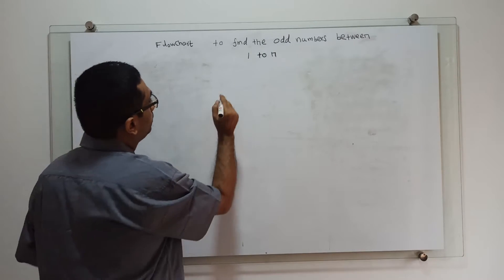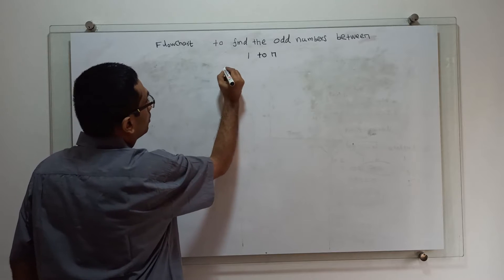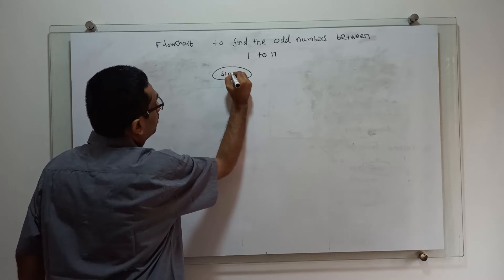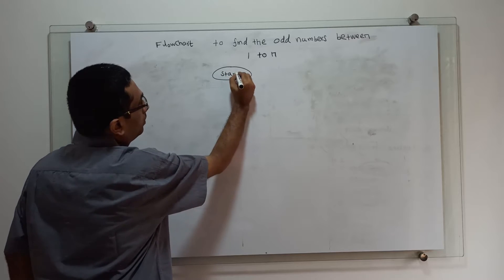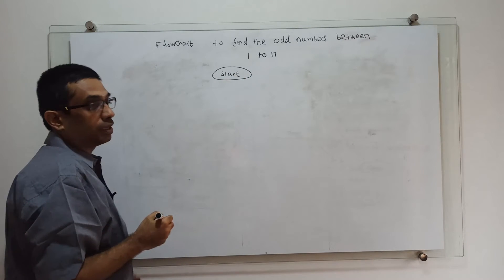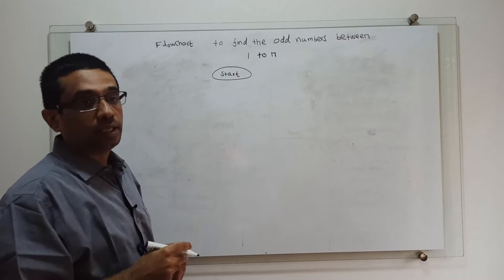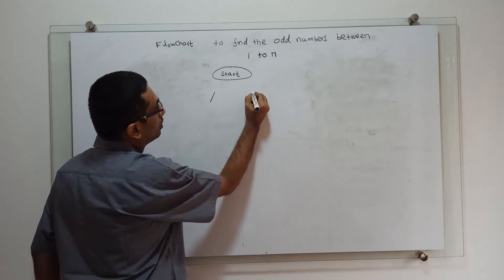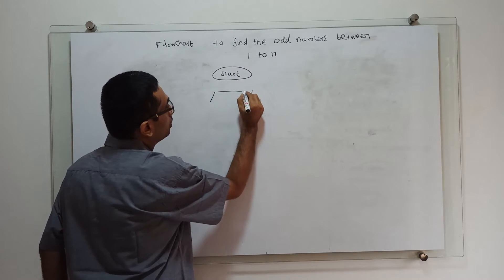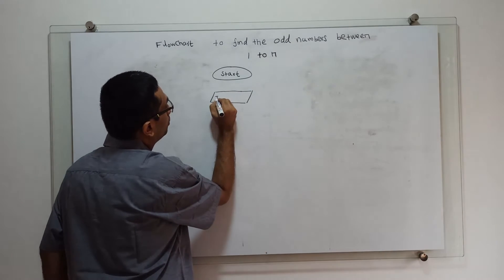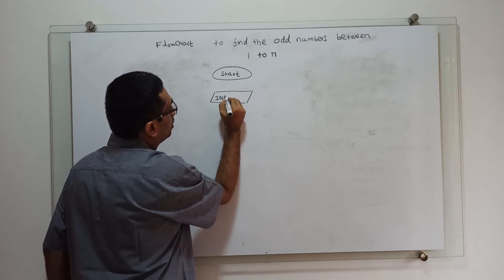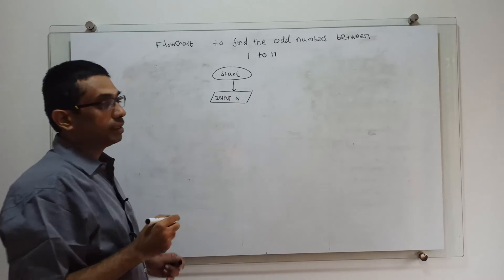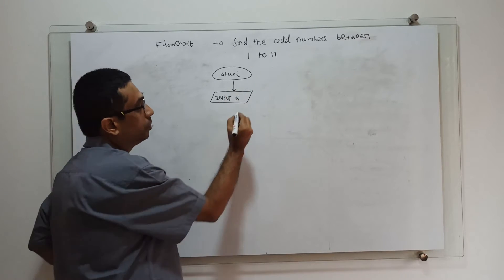Start symbol — this is the start of the flowchart. Next, input: I have to get the input n. This is my input n. I am obtaining an input range from the user.